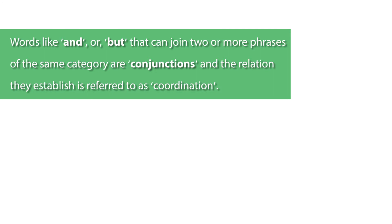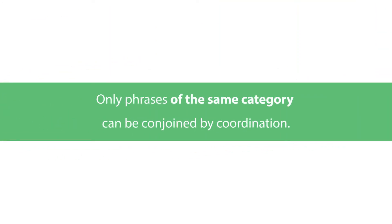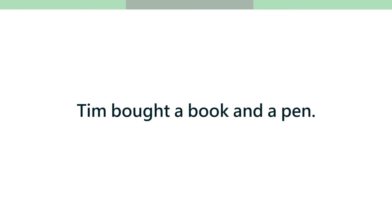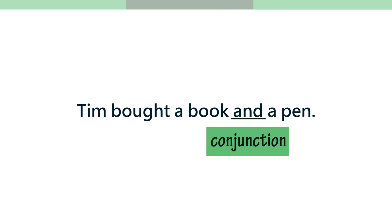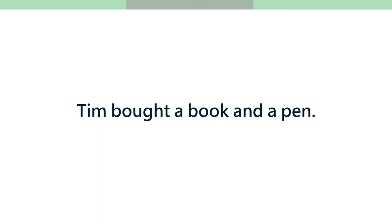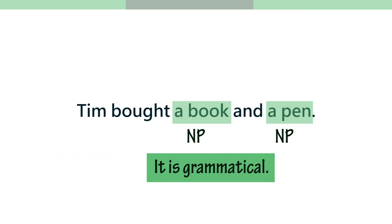Probably the most important rule is that only phrases of the same category can be conjoined by these conjunctions through the process of coordination. For example, when I say 'Tim bought a book and a pen,' what is being coordinated? The phrase 'a book' and then 'a pen' — these are two separate phrases, and both of them are noun phrases. The sentence is grammatical because the coordinating conjunction has been used properly, coordinating two noun phrases.